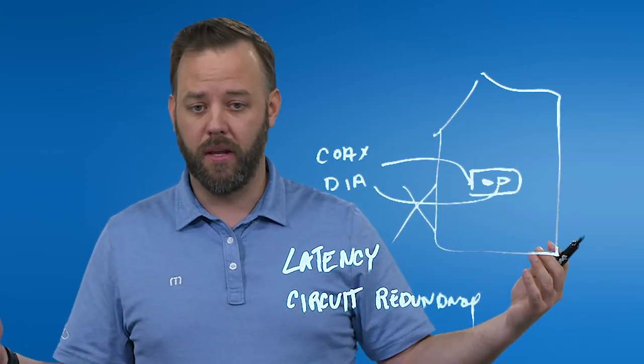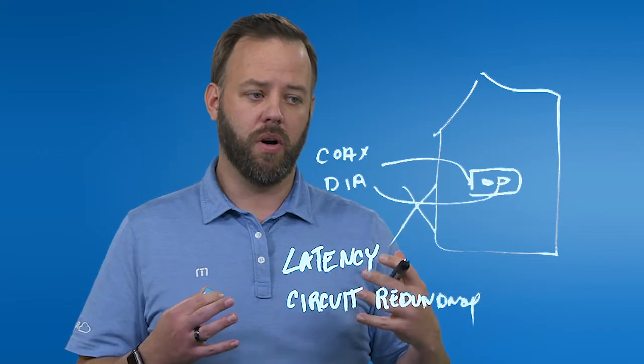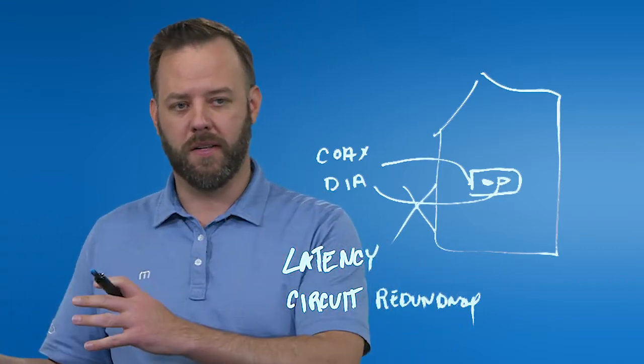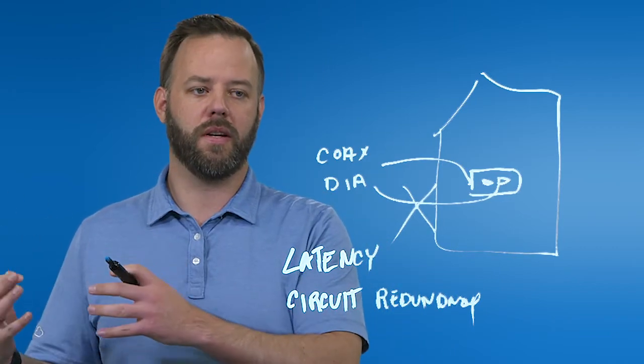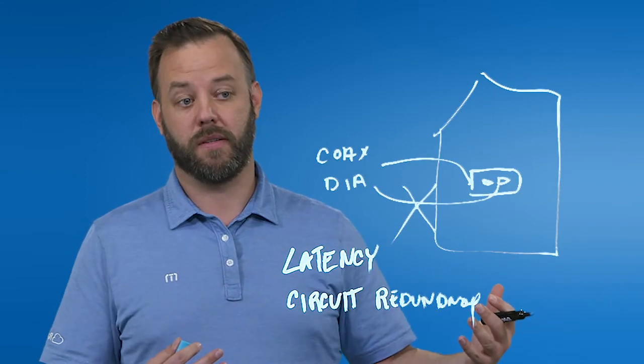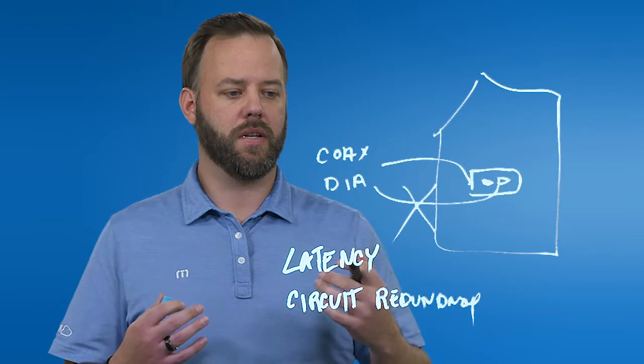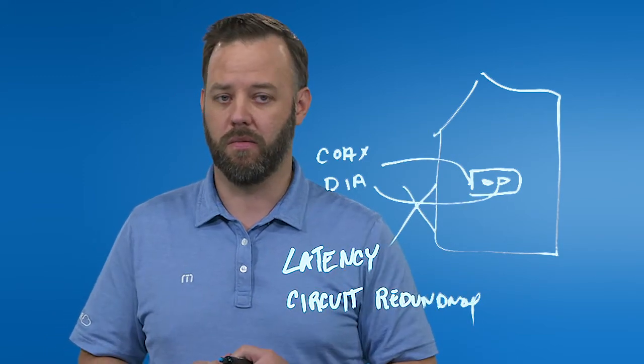End users never know any different and the network stays up and available and it's really important when you move all your stuff to the cloud that you have a redundant and resilient network because when all your servers are sitting in the room behind you, that's less important. When you move them to the cloud, well, you want to have redundancy and resiliency so that you can access those things over the network.